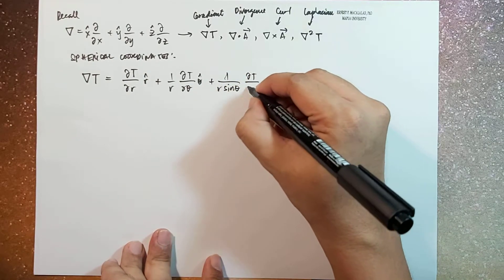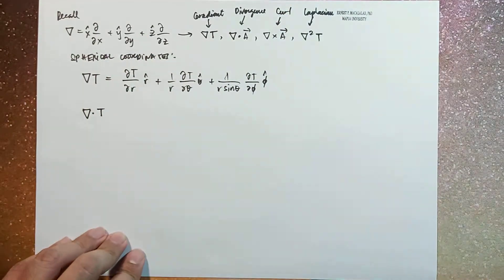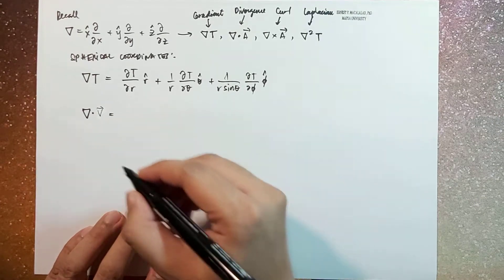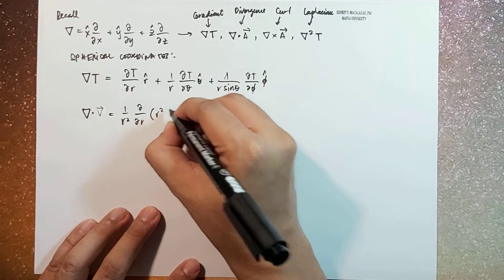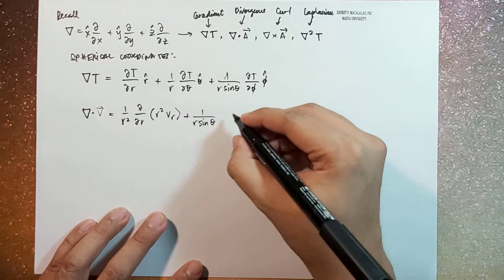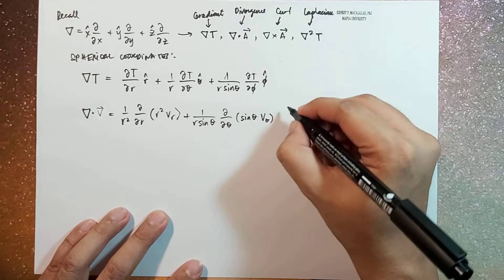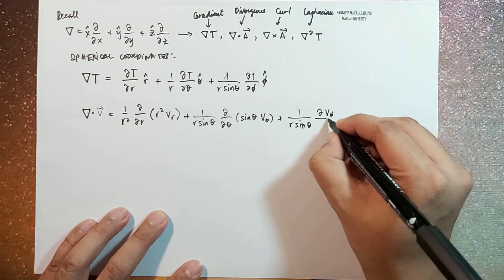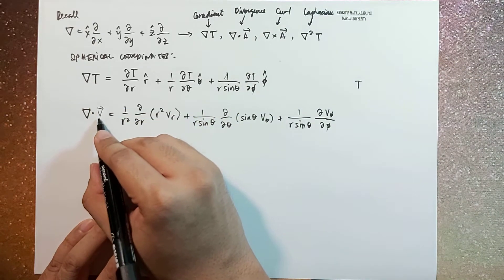The divergence of a vector field V is given by 1 over r² times the partial derivative with respect to r of the product r²·V_r, plus 1 over r·sin(θ) times the derivative with respect to θ of sin(θ)·V_θ, plus 1 over sin(θ) times the partial derivative of V_φ with respect to φ.